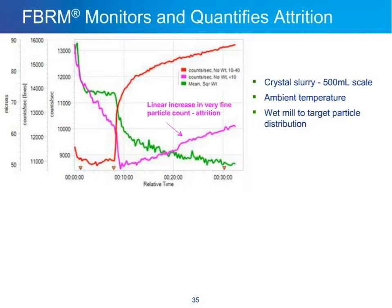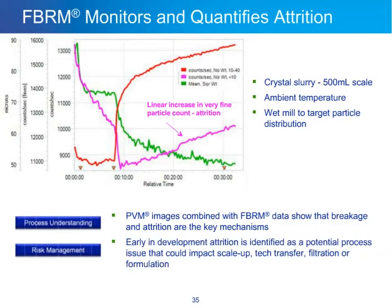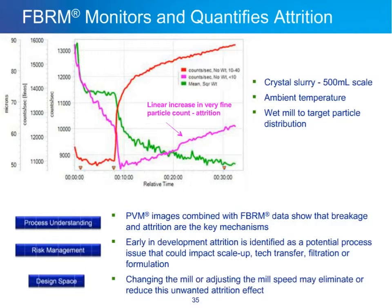This gives us process understanding: PVM images combined with FBRM data show that breakage and attrition are the key mechanisms. In terms of risk management, attrition is identified early in development as a potential process issue that could impact scale-up, tech transfer, filtration, or formulation — something we may need to eliminate or at least track and control repeatably. For the design space, we can potentially change or adjust the mill speed or other process parameters to eliminate or reduce this unwanted attrition effect.